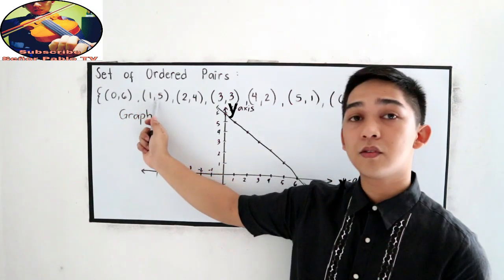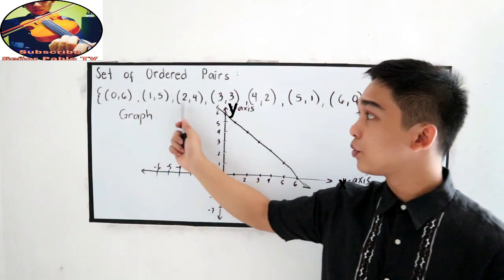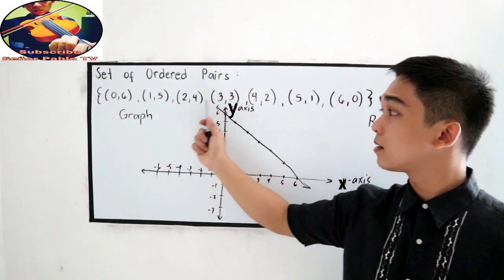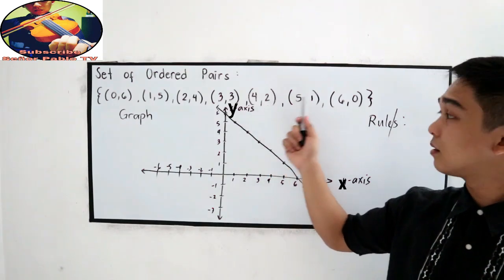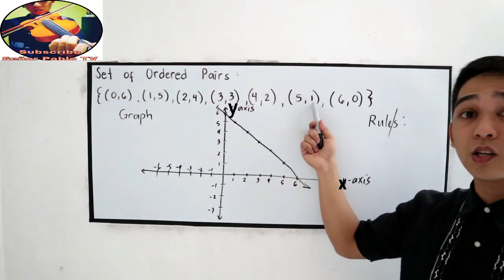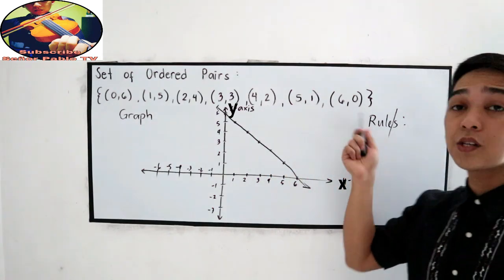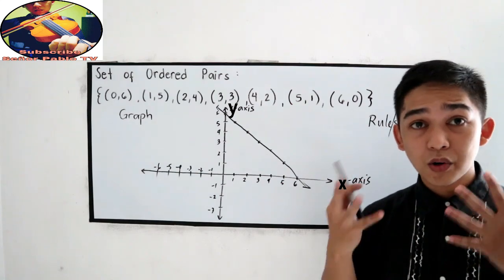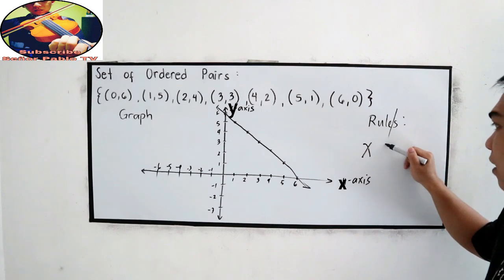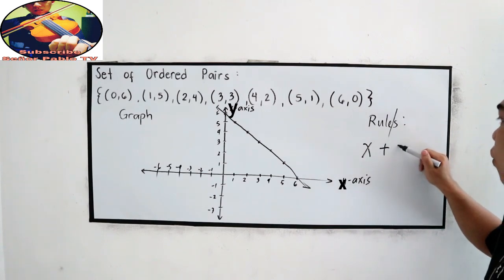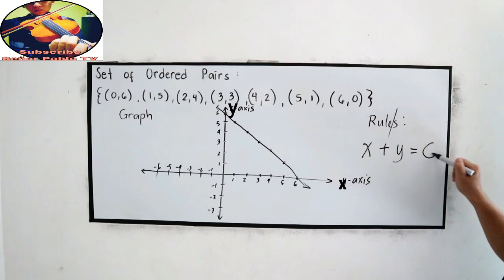1 plus 5, the sum is 6. 2 plus 4, 6. 3 plus 3, 6. 4 plus 2, 6. 5 plus 1 is equal to 6. And, 6 plus 0 is equal to 6. So, our rule is that if I am going to add the x-coordinate plus y-coordinate, that is equal to 6.